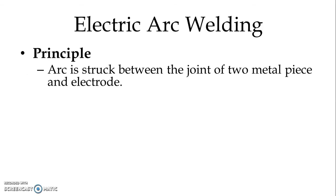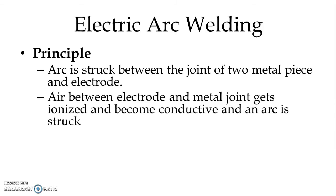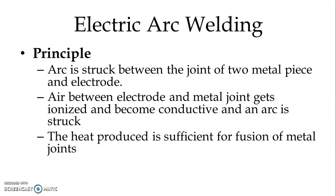Let us start with the principle. In electric arc welding, arc is struck between the joints of two metal pieces and electrode. First, electrode is brought in contact with the metal piece like a short circuit and then it is taken back to generate the arc between electrode and work piece. Air between electrode and metal joint gets ionized and becomes conductive and then an arc is struck. Because of the arc, the heat produced is sufficient for fusion of metal joints.